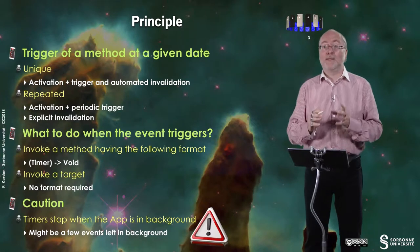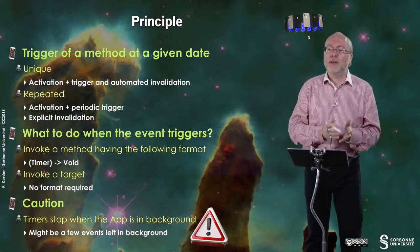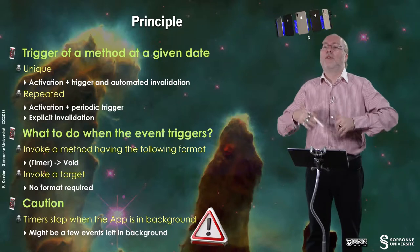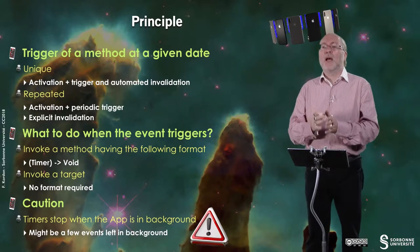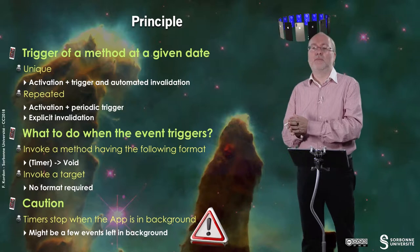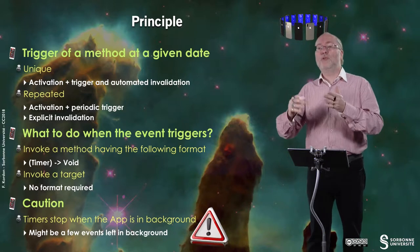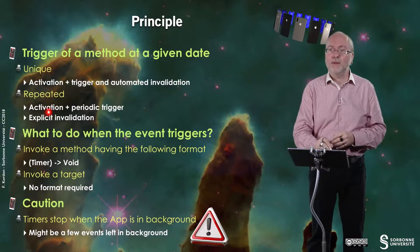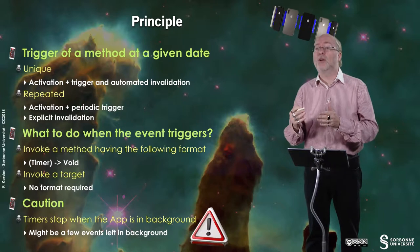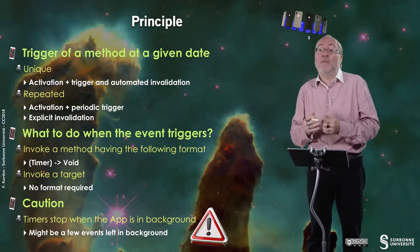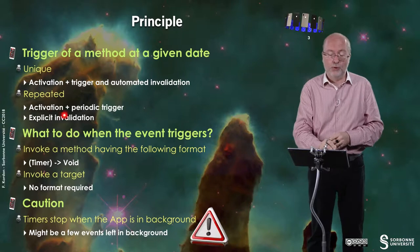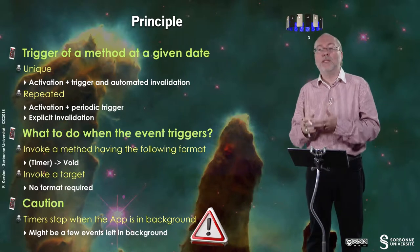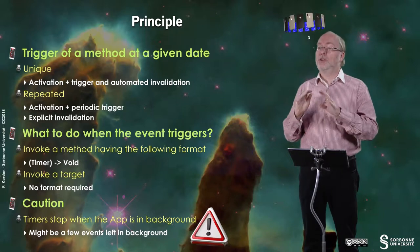The principle is simple. You have two ways to trigger a method at a given date. You can do it just once — you activate your timer, the method is triggered, and the timer is automatically invalidated. Or you want to have a repeat trigger of the handler — you activate it, then you have the periodic trigger. But of course, the invalidation of the timer cannot be automated and you have to do it explicitly. When you do it, the periodic trigger stops.